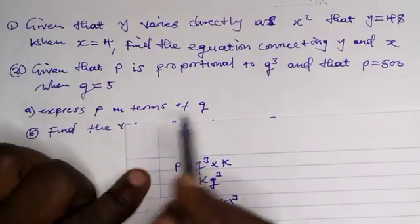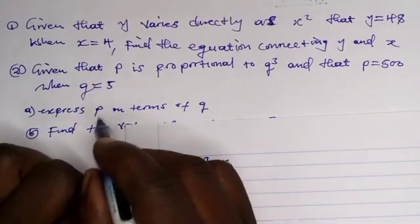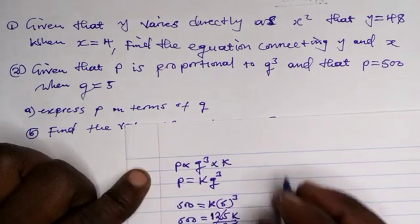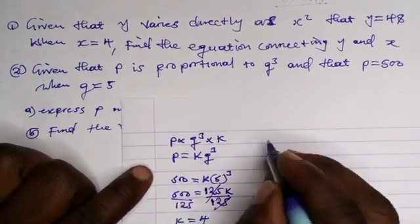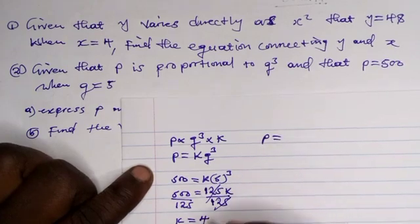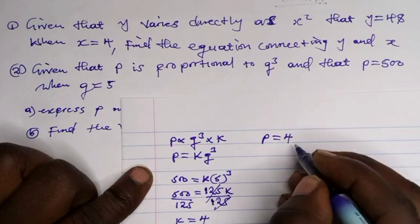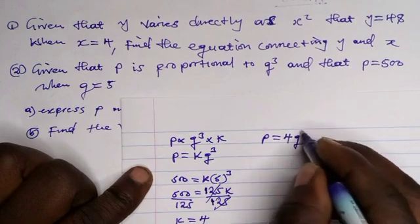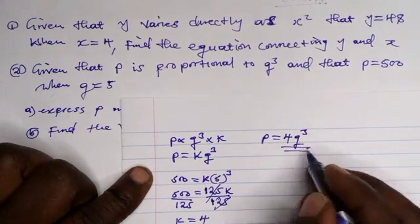The expression for p in terms of q is p equals 4 times q cubed, where k is 4. This completes problem 2a.